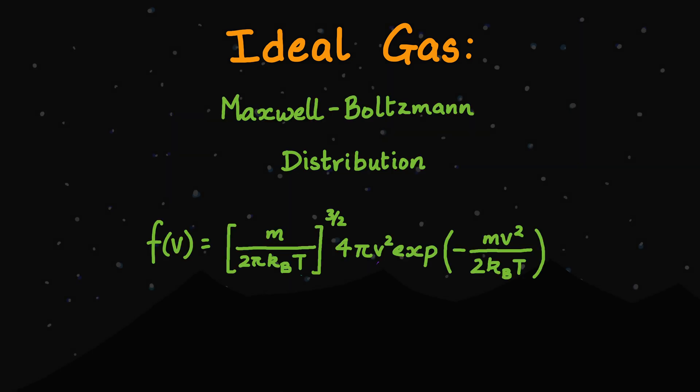As always, this looks like a really complicated equation, but there's only a few things we need to know about it. Firstly, the function takes into account things like the mass of the particles of gas that we're studying, M, and the temperature of the gas, T. All the other quantities on the right-hand side of this equation, apart from V, the speed, are just constants. They help us scale this equation to make sure we get the right values for each gas and temperature that we study.